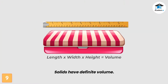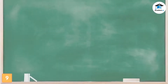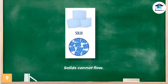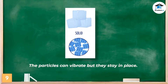Solids have definite volume. Get a ruler and determine the volume of your pencil case by multiplying its length, width, and height. Since the particles of a solid are very close together, its volume cannot be changed easily. Solids cannot flow — solid particles are held together by attractive forces that prevent them from moving around. The particles can vibrate but they stay in place.